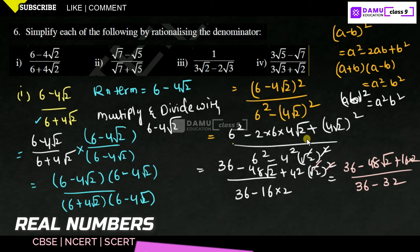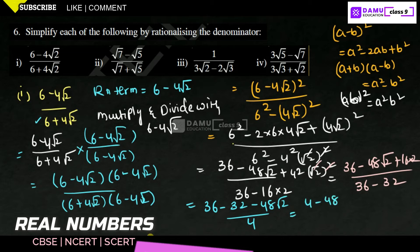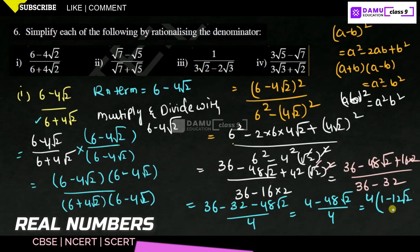So the numerator is 36 plus 32 minus 48 root 2, which is 68 minus 48 root 2, and the denominator is 36 minus 32, which equals 4. That gives us (36 minus 48 root 2) divided by 4. Taking 4 as common factor from the numerator: 4 times (9 minus 12 root 2) divided by 4. The 4s cancel, giving our final answer: 9 minus 12 root 2.